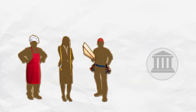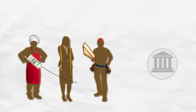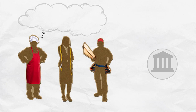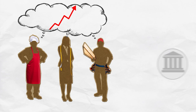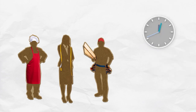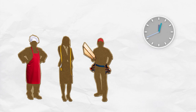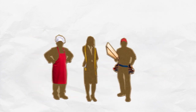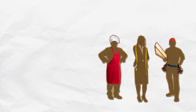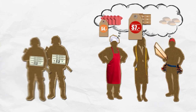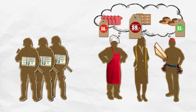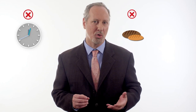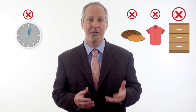Eventually, as the government continues to print money and buy goods, the baker, the tailor, and the carpenter will catch on. They'll come to expect and prepare for inflation. Instead of working extra hours, they'll realize that by the time they get to spend their money, the goods they want to buy will have already increased in price. And knowing this, they'll no longer be so happy to see the soldiers entering their shop waving fistfuls of dollars, and they'll no longer work extra hours baking more bread, sewing more clothes, or building more cabinets.